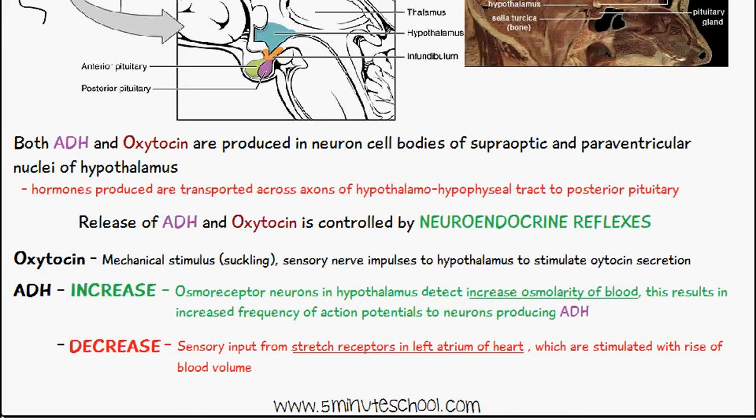This increase in blood osmolarity results in an increased frequency of action potentials to neurons producing ADH, in order to increase the amount of ADH secretion. To decrease the amount of ADH secretion, sensory input from the stretch receptors in the left atrium of the heart are stimulated with a rise in blood volume.